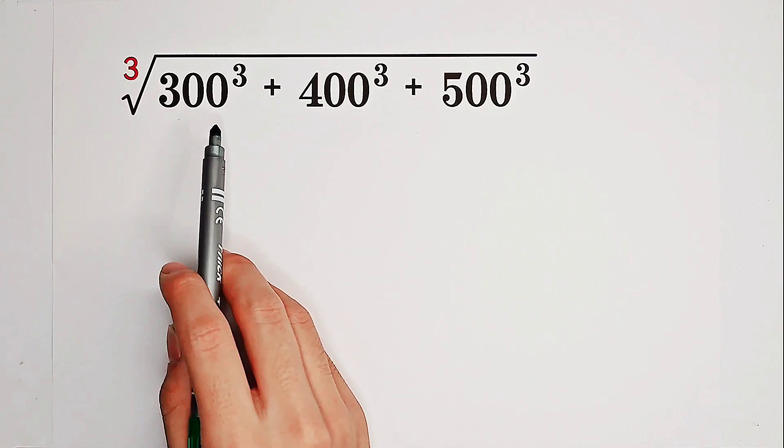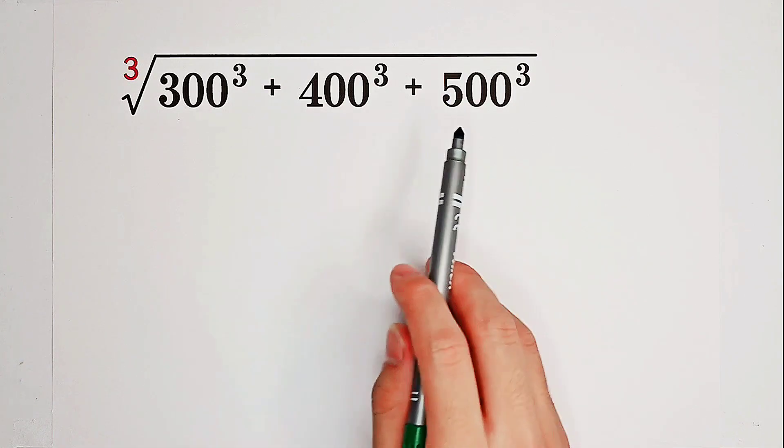Calculate the cube root of 300 cubed plus 400 cubed plus 500 cubed.